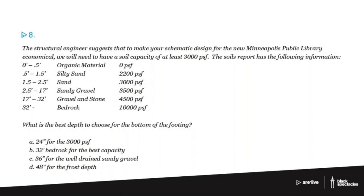Number eight. The structural engineer suggests that to make your schematic design for the new Minneapolis Public Library economical, we will need to have a soil capacity of at least 3,000 PSF. The soils report has the following information: organic material at the first six inches, silty sand until about 18 inches, sand a little bit after that, sandy gravel, gravel and stone, and bedrock down below 32 feet. We're trying to figure out what is the best depth to choose for the bottom of the footing.